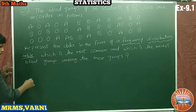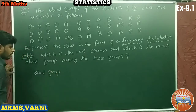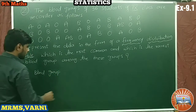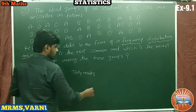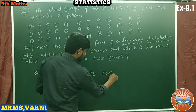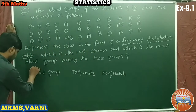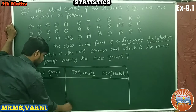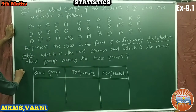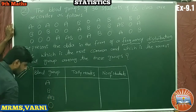So first of all we have to write the blood groups. This is the table with columns: blood group, tally marks, and number of students. The blood groups we have are A, B, AB, and O.